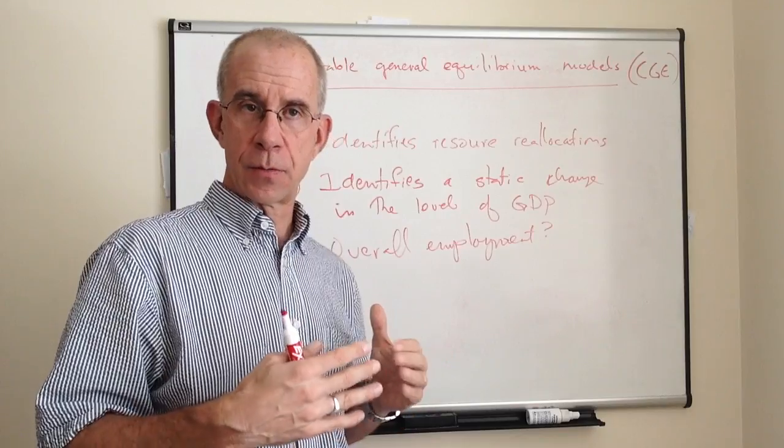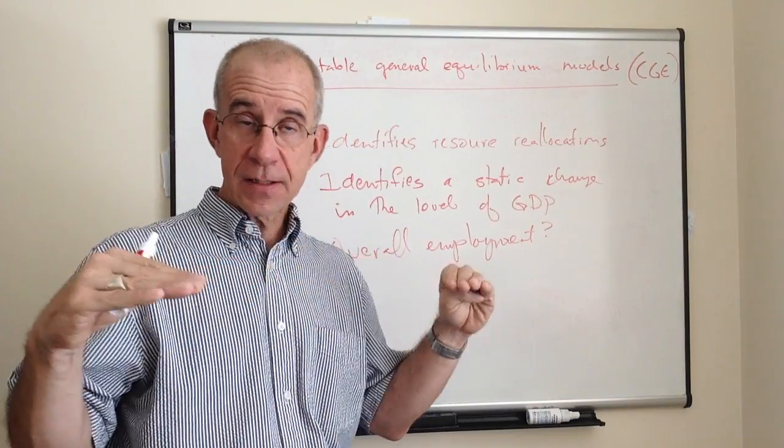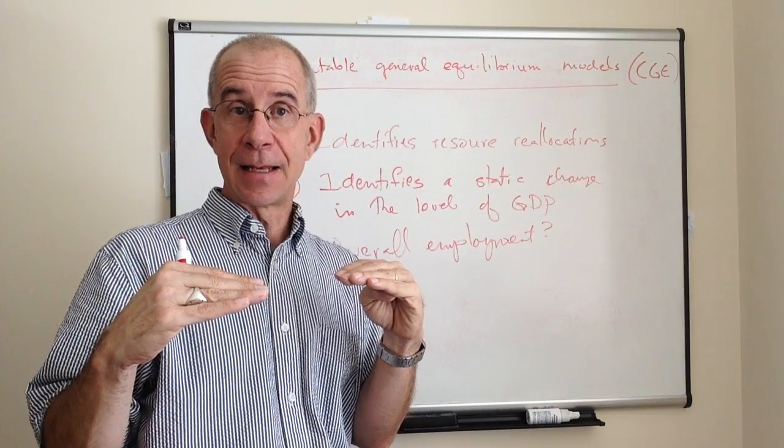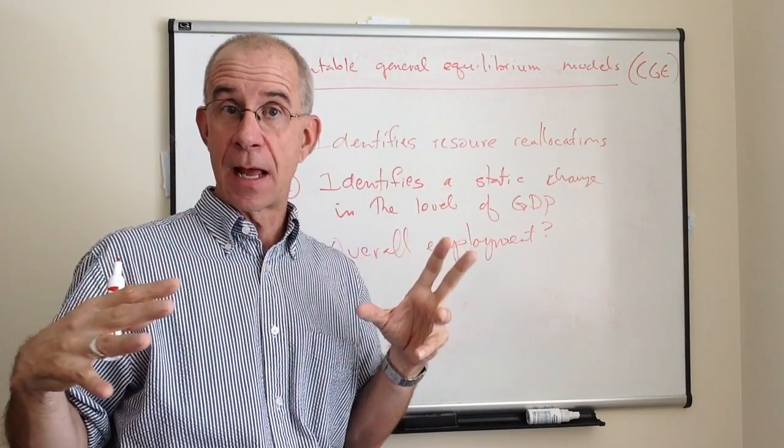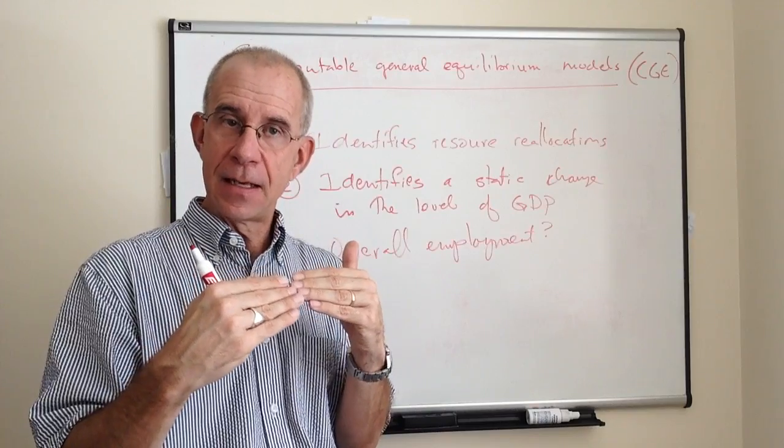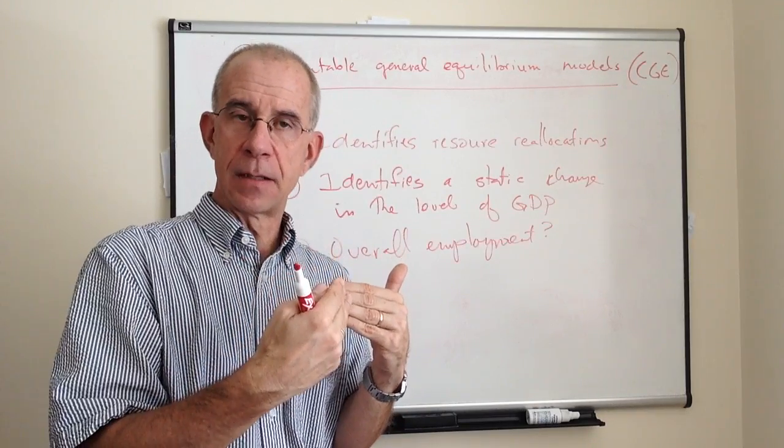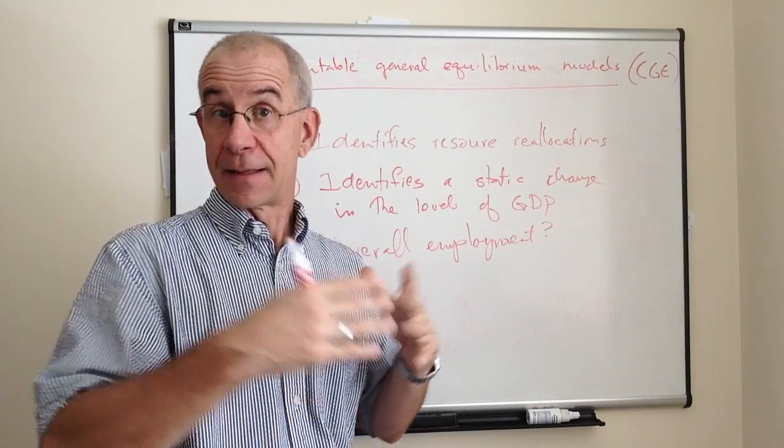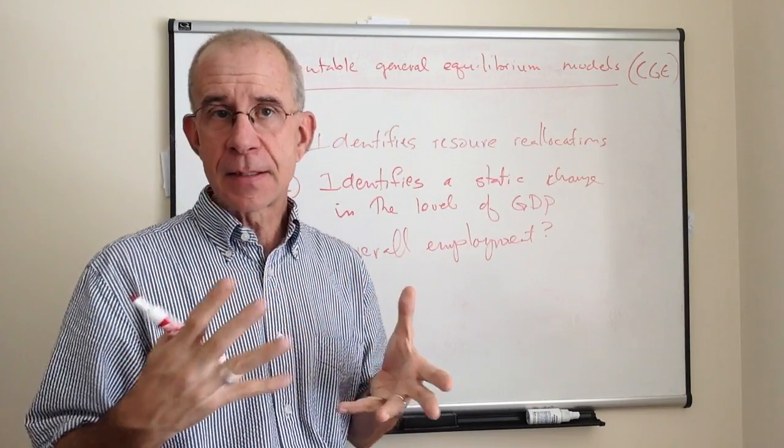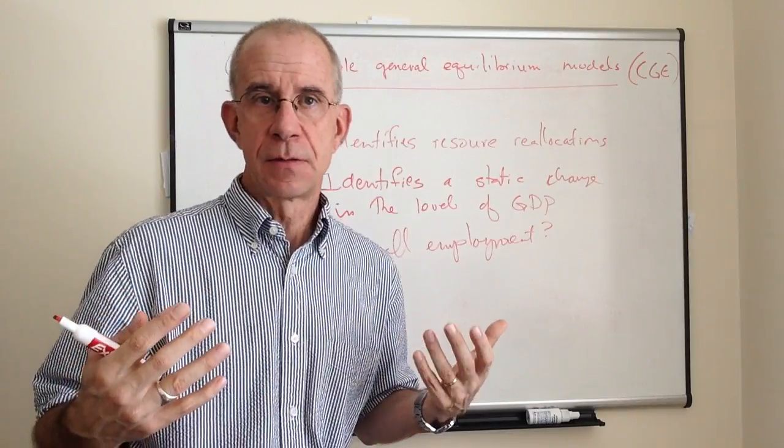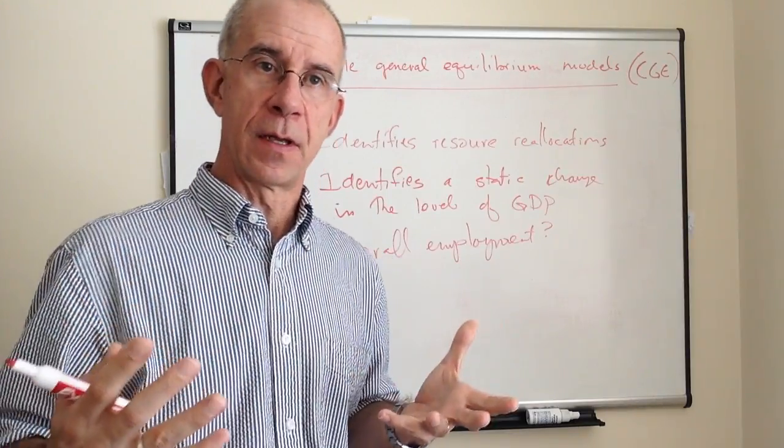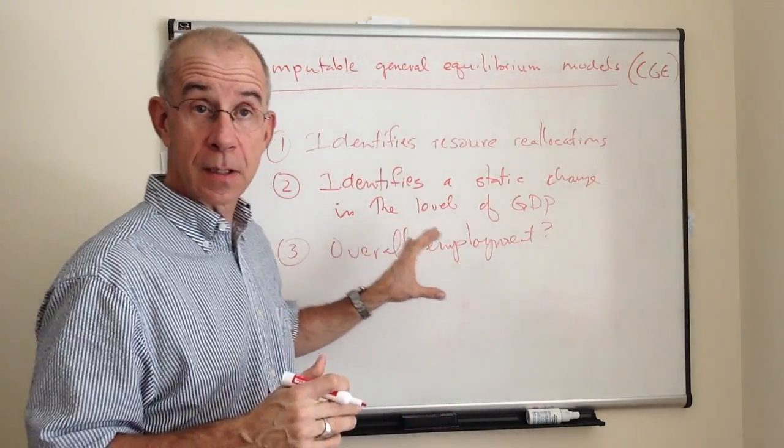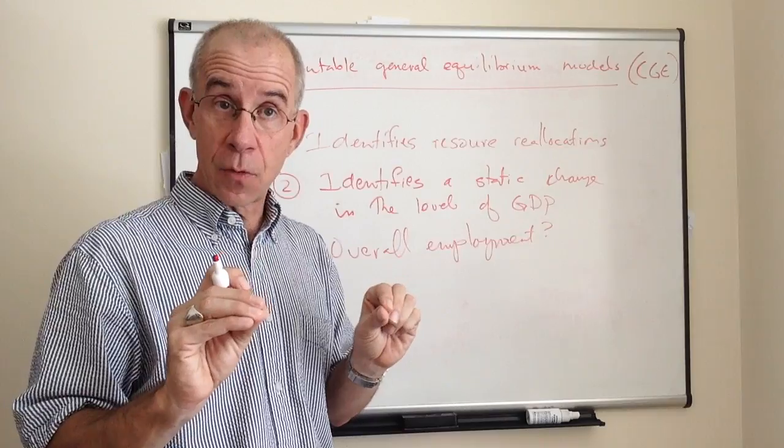The standard approach is to assume a fixed level of labor in the economy and then look at how that labor is reallocated. It doesn't have in it a supply response for labor at the economy-wide level. They keep that fixed. That's in part because everything can't be determined within the model. You have to fix some things.